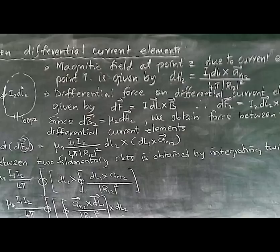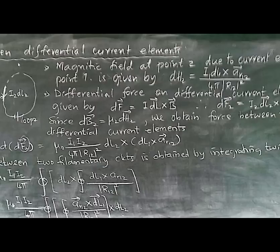So what is this force between differential current elements? We have two differential current elements: i1·dl1 and i2·dl2. The path separating the current elements is called r12. This is represented as loop one and loop two, and these are the two differential current elements moving in opposite directions — i1·dl1 moving upward and i2·dl2 moving downward.